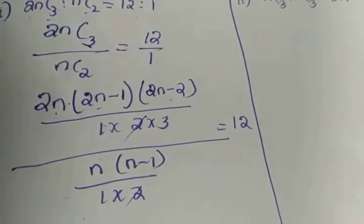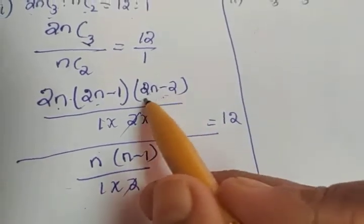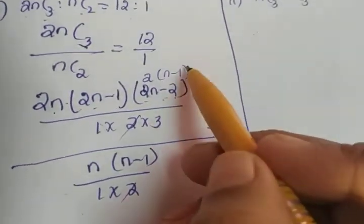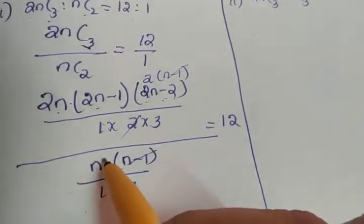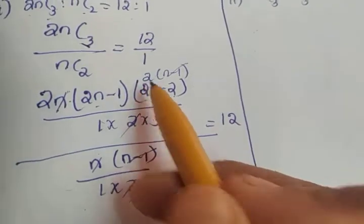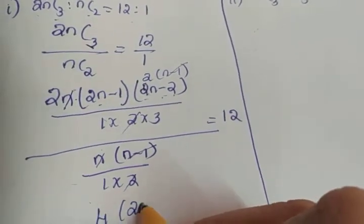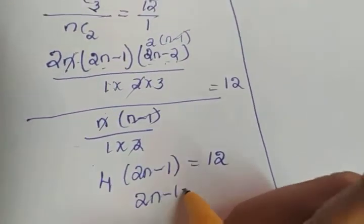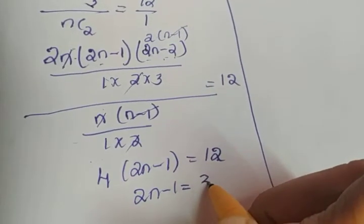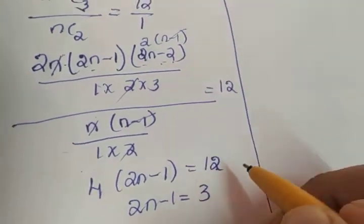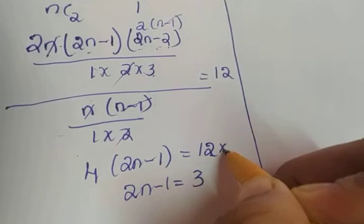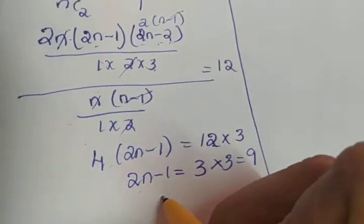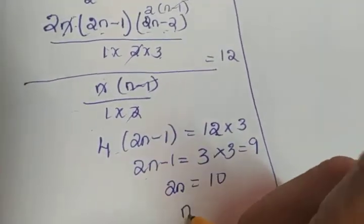The 2s in both denominators cancel. From 2N minus 2, taking 2 as common gives 2 into N minus 1, so N minus 1 cancels with N minus 1, and N cancels with N. The balance is 2 into 2, giving 4 into 2N minus 1 equals 12. So 2N minus 1 equals 3, then 2N equals 10, and N equals 5.